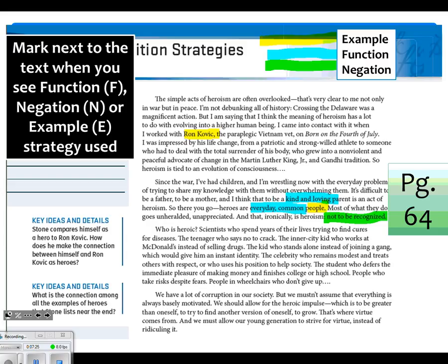Let's take a look at the next one. Who is heroic? Scientists who spend years of their lives trying to find cures for diseases. The teenager who says no to crack. The inner city kid who works at McDonald's instead of selling drugs. The kid who stands alone instead of joining a gang, which would give him an instant identity. The celebrity who remains modest and treats others with respect, or who uses his position to help society. The student who defies the immediate pleasure of making money and finishes college or high school. People who take risks despite fears. People in wheelchairs who don't give up. Okay, take a moment. What strategies do you think you're seeing there?